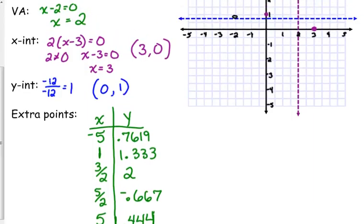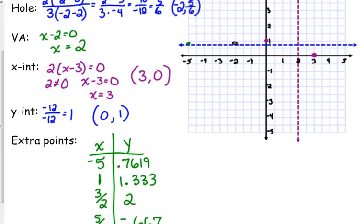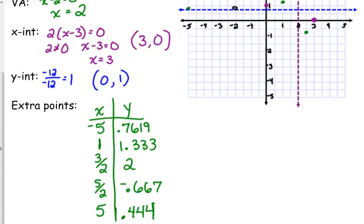So now we can fill in these points on our graph here. Negative 5, 0.76 is slightly greater than 2 thirds. 2 thirds is 0.67. So kind of cram that in there. 1 is 1.3. So that's about here. Yeah, I'm just plotting points. So yeah, they're solid dots. 3 halves, 2. 5 halves is negative 0.67. So about right there. And what was 5? 0.44. And I just saw what the graph looked like. So at this point, I've got enough points. I can fill in my graph. Essentially, I'm just going to connect the dots. Don't go through your hole. Make sure you pick up your pencil.